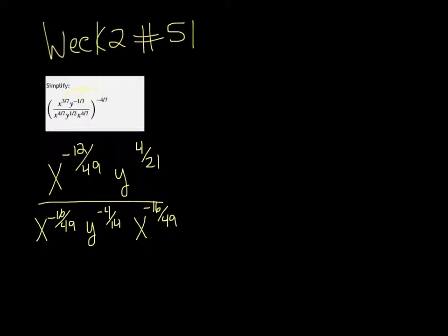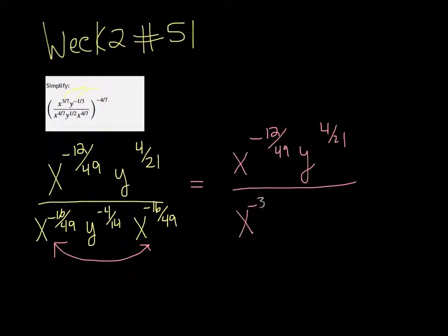The two x's in the bottom can be multiplied together and we can add their exponents. So the top remains the same, x to the negative 12 over 49, y to the 4 over 21, all over x to the negative 32 over 49, y to the negative 4 over 14.